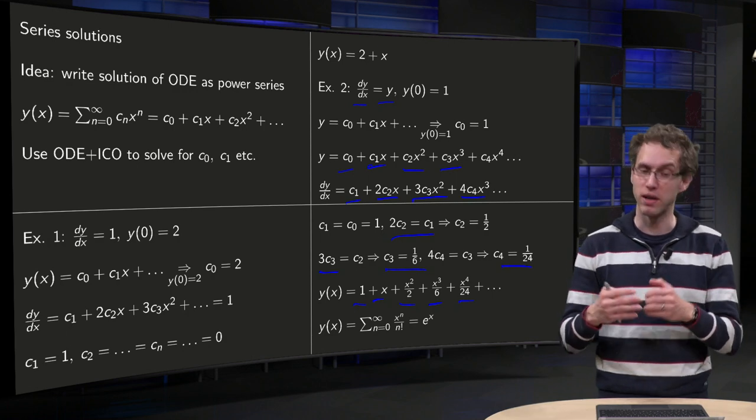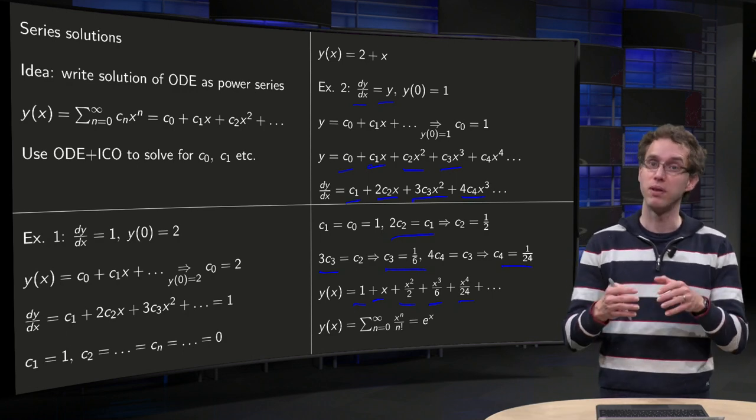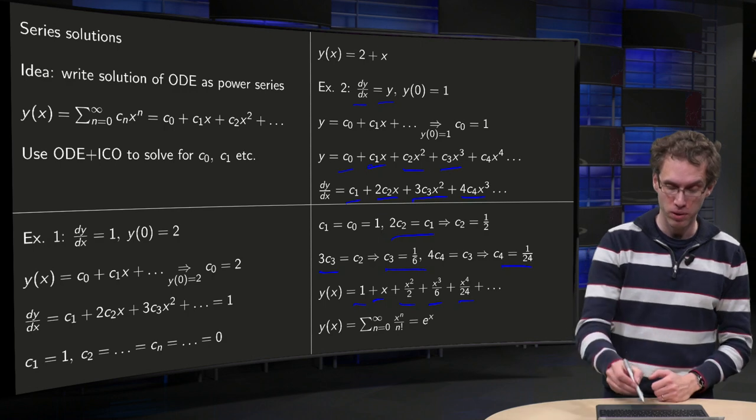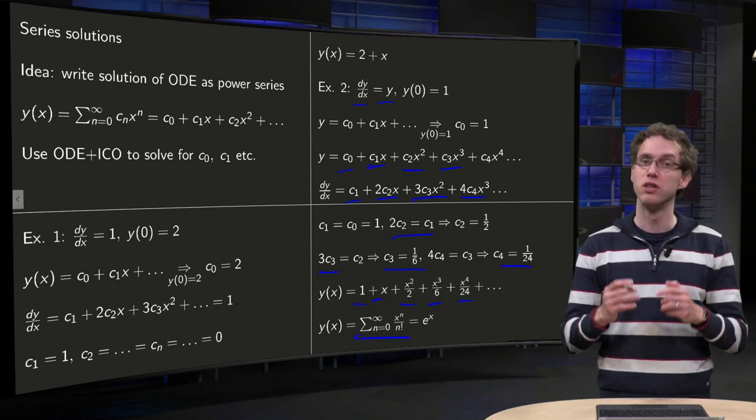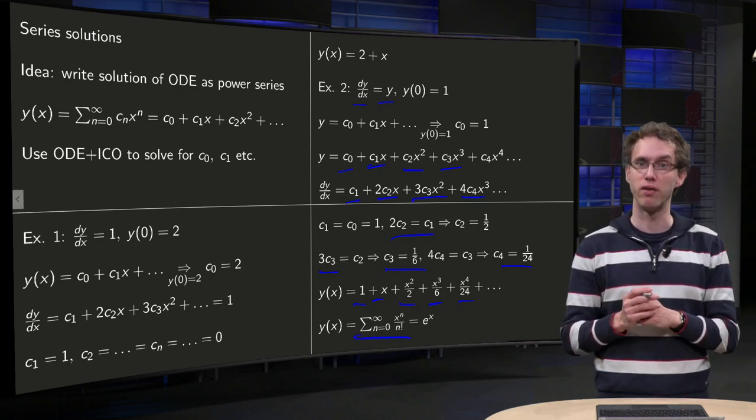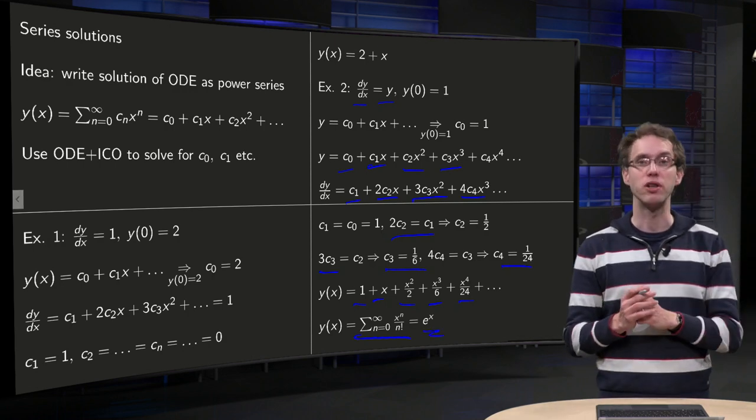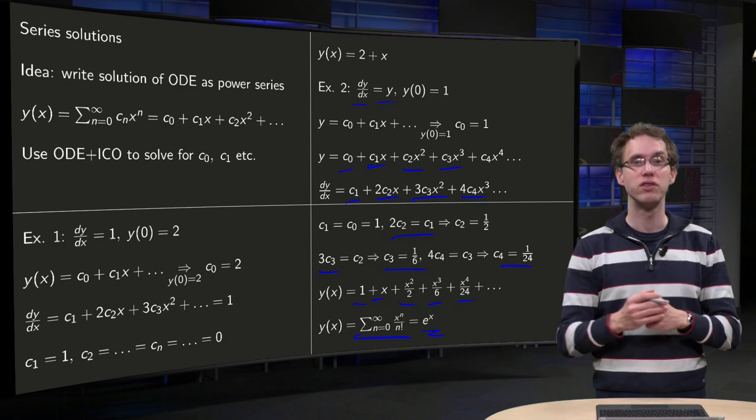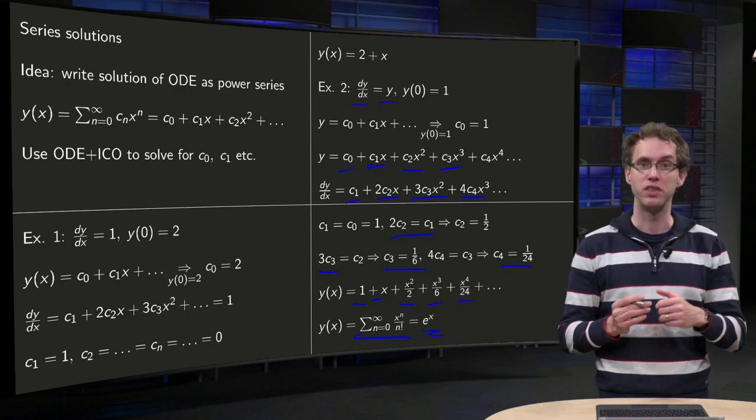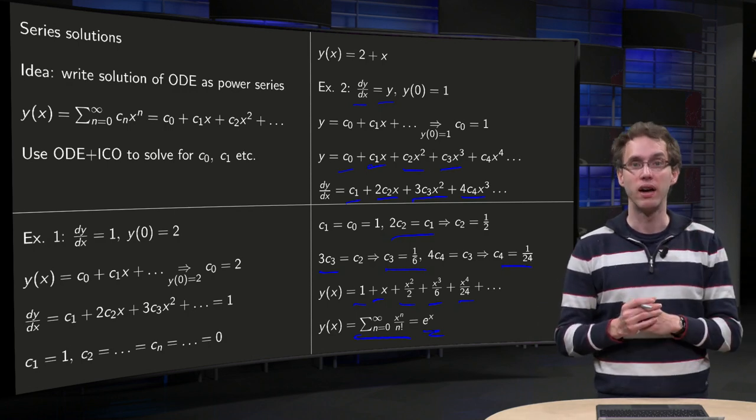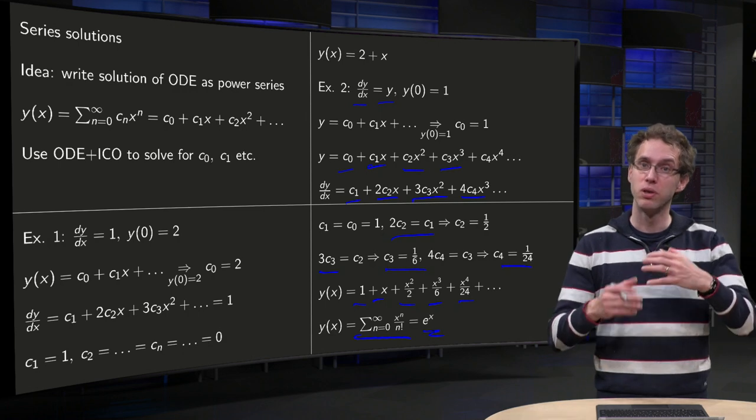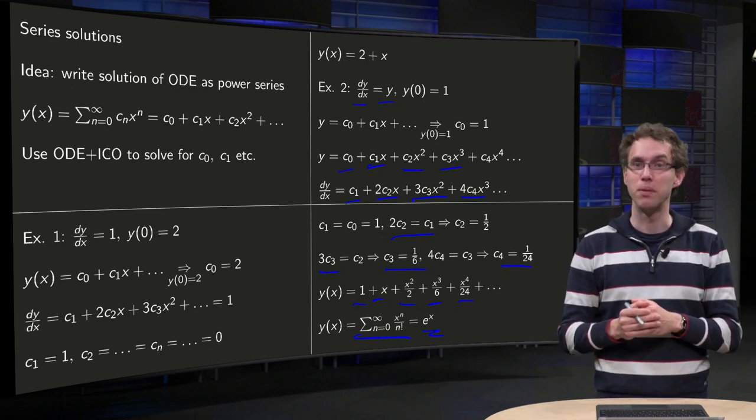Cn behaves like 1 over n factorial, so your total solution would be sum n from 0 to infinity x to the power n over n factorial equals e to the power x. So also, if you have an infinite number of nonzero coefficients, you still can use this method, because you sometimes can recognize the pattern in the cn.